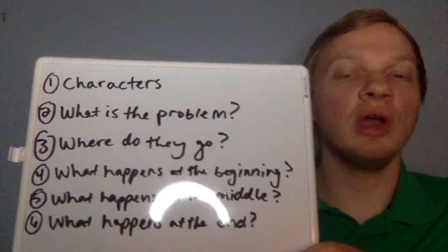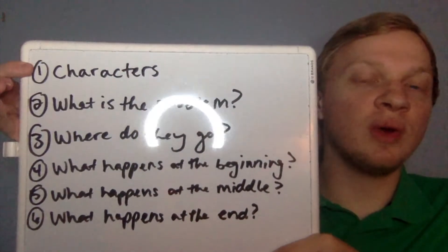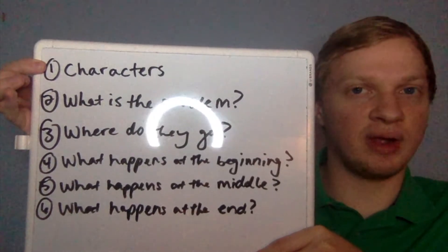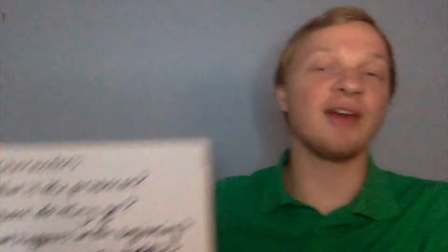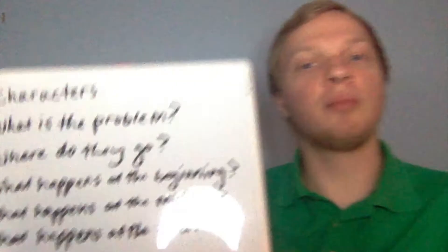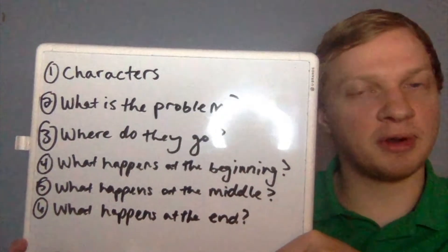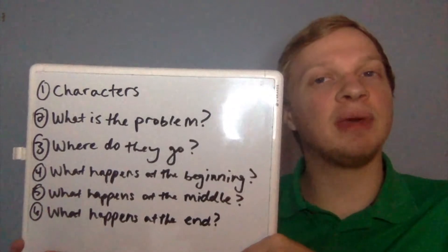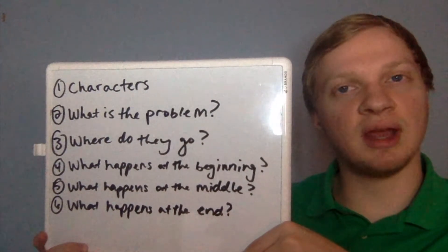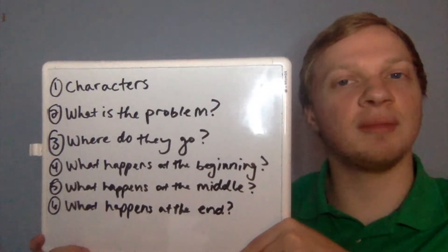And that is the story. So first, we need to look at our board again. Can you remember who the characters were in the story? Yeah, there were two characters. There was Pete the monkey and there was Pangy the penguin. Now, what was the problem in the story? Can you remember? Yeah, Pete thought that all of the bananas were gone from the house and he could not find them anywhere.